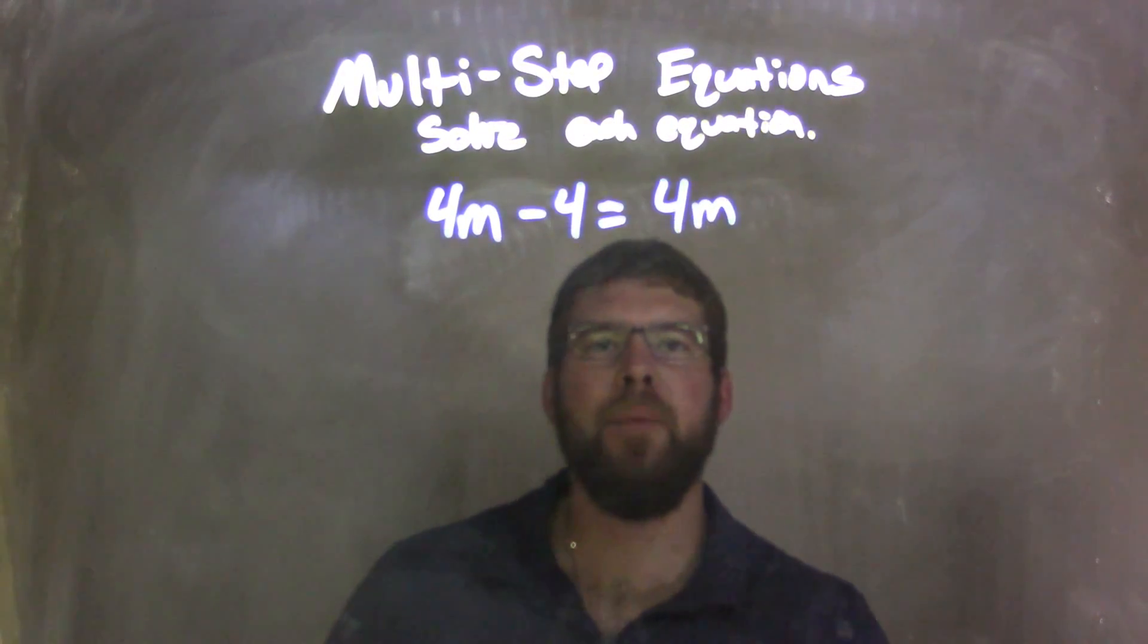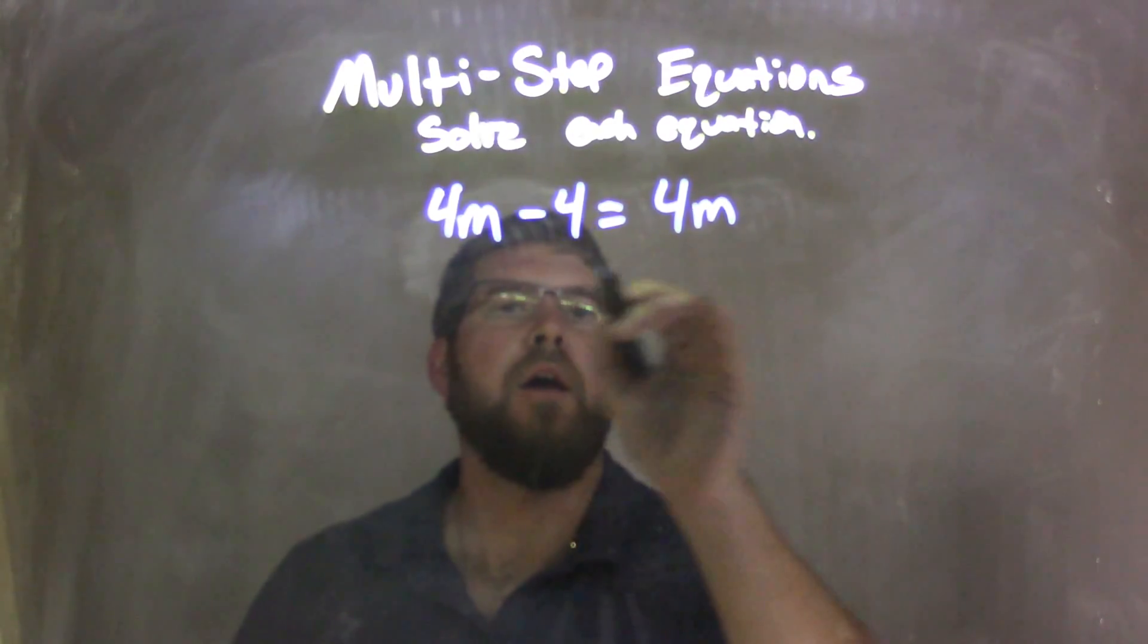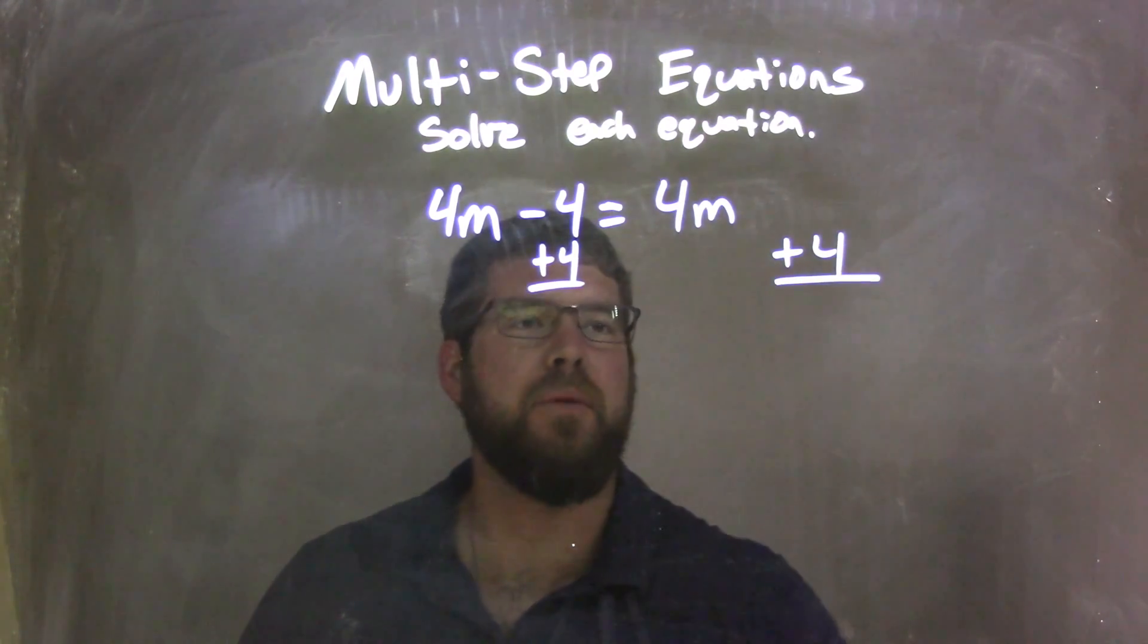Well, I want to combine my like terms, so I'm going to bring all my m's to the left and all my numbers to the right. So first step, let's go add a 4 to this side here, I'm going to add a 4 here.